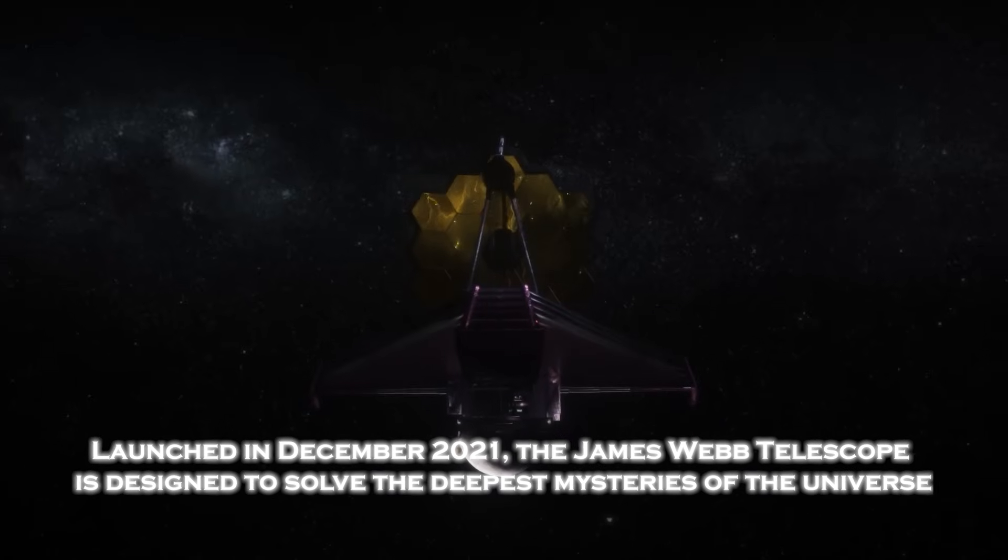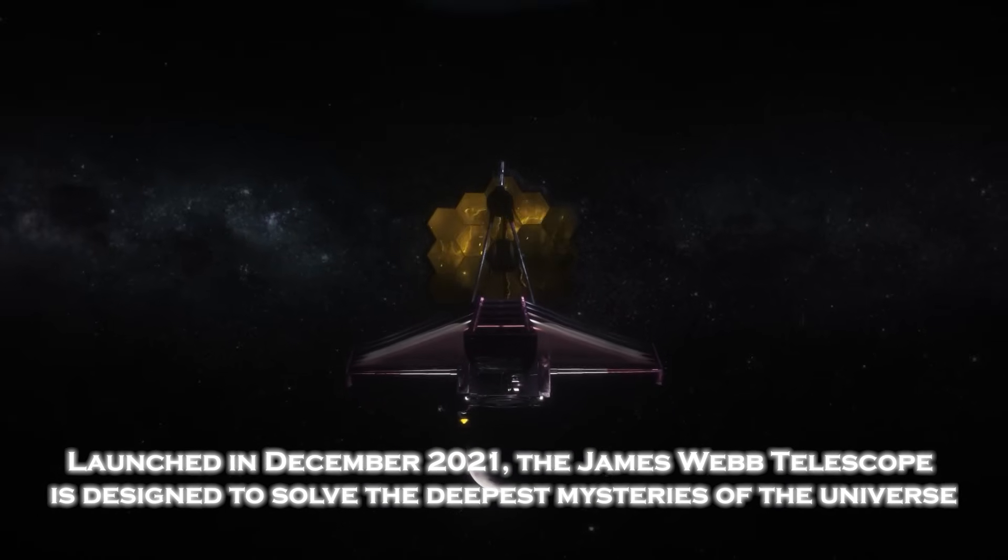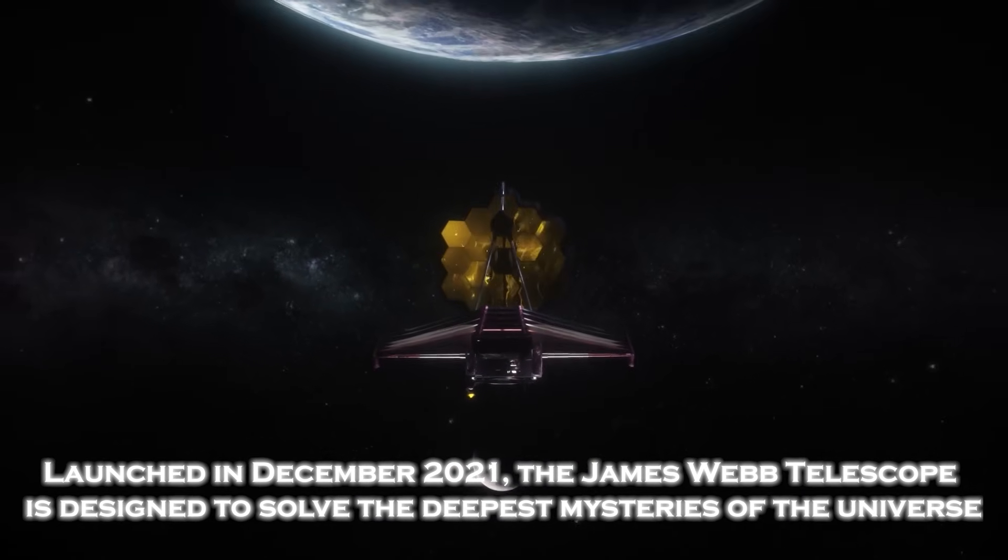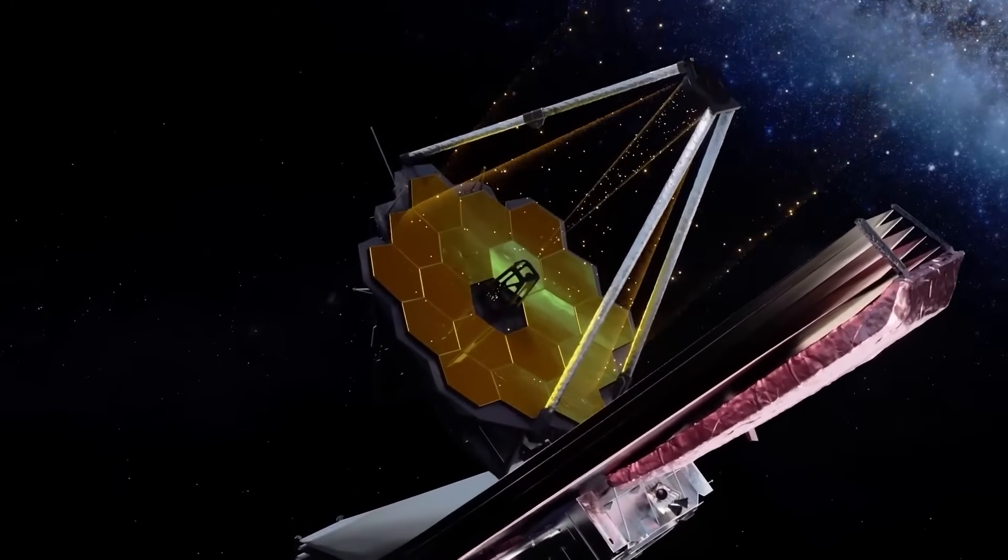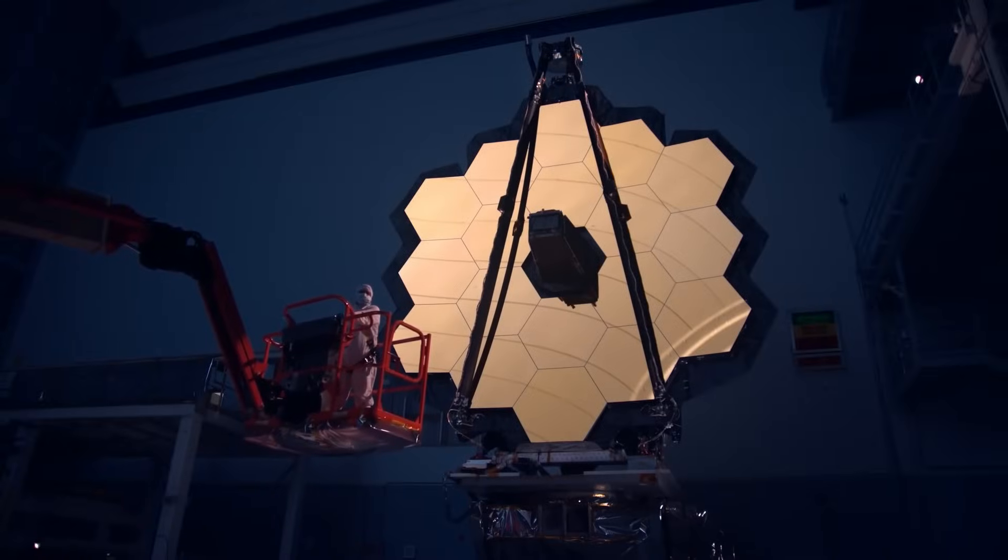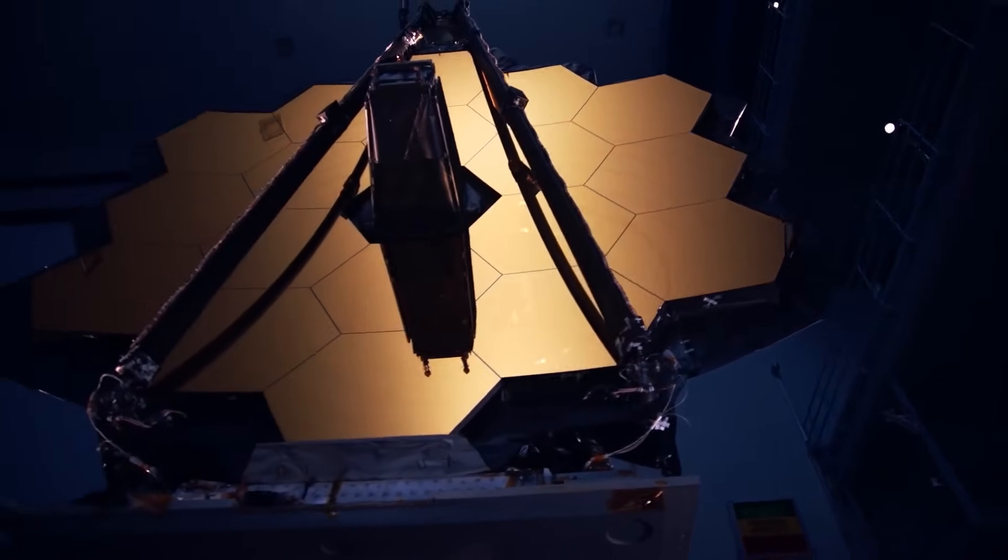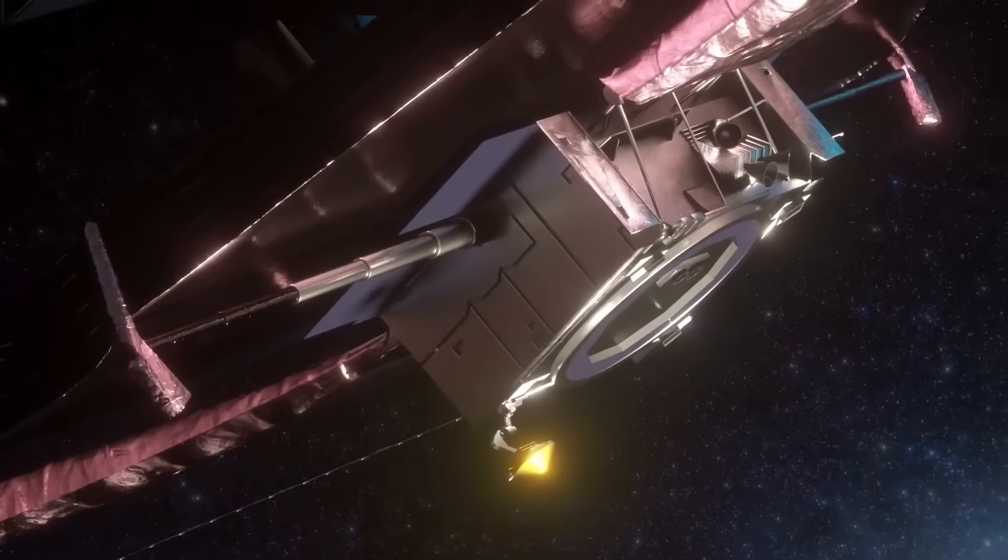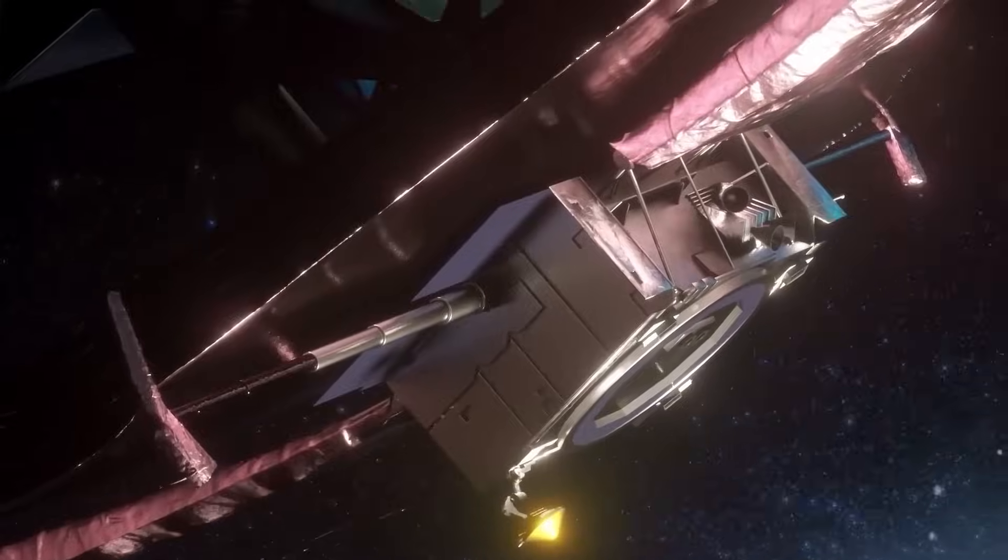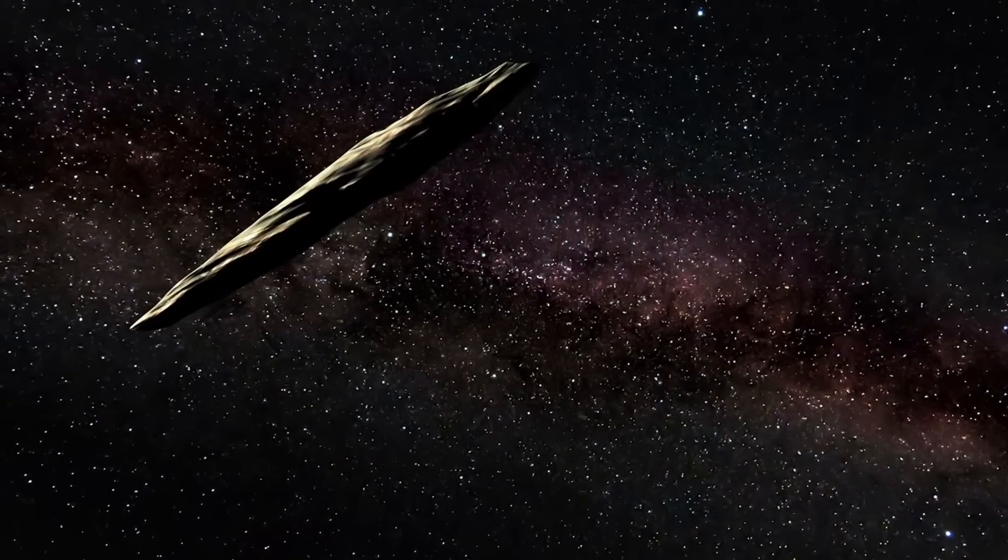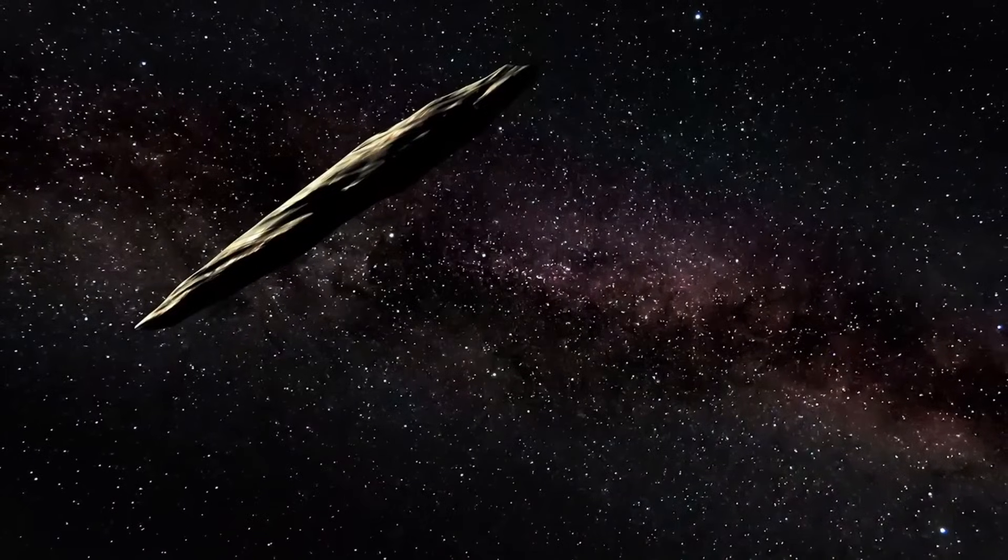Launched in December 2021, the James Webb Telescope is designed to solve the deepest mysteries of the universe. Its ability to observe the infrared spectrum allows it to capture details impossible for other telescopes. When Webb turned its gaze toward Oumuamua, now much further from our solar system, it captured something incredible: the first real image of this mysterious interstellar object.